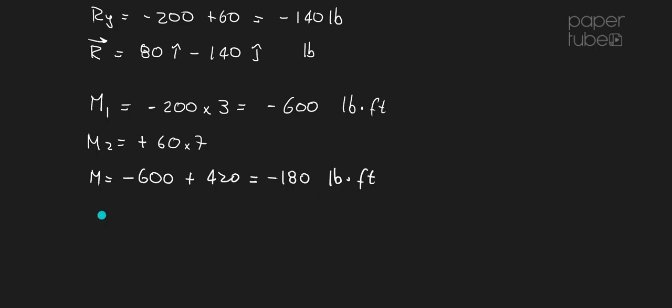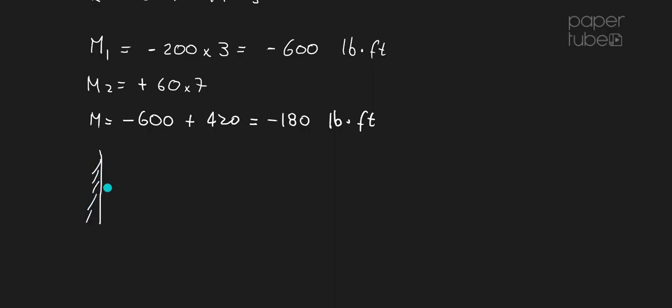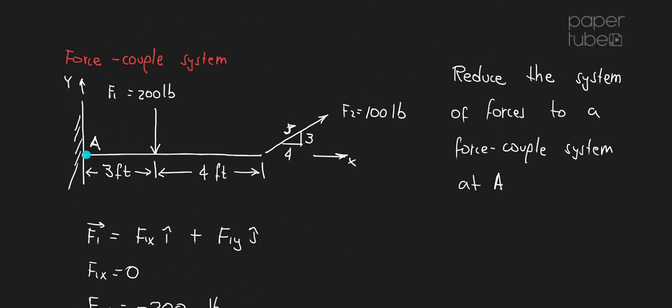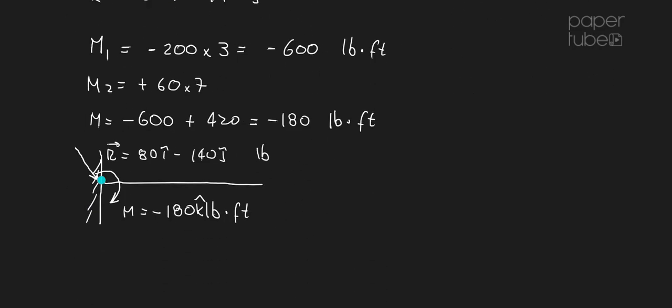So what I can do is I can replace the system that we have above with a moment of minus 180 pounds-foot and a force that is, and that force, that R, is going to be equal to 80i minus 140j pounds. Just to make everything in vectors, this would be k. So the solution will be all in vectors. So these two forces that we have on top, we can simplify them to a force and a moment as shown here at the bottom.